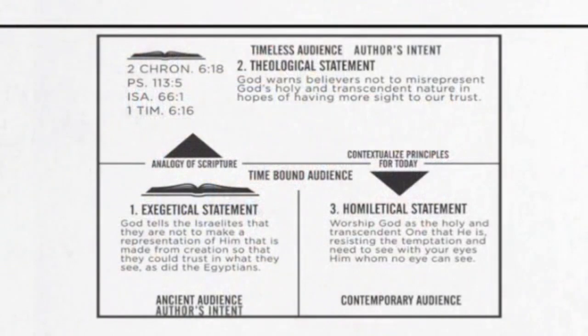God says: you shall not make any idol representation. But what is he really saying? You shall not attempt to control me in any way. Is there any scripture that conflicts with this? No — universally throughout scripture, God is God and we are not. As Daniel says: who can hold back my hand and say, 'What have you done?' Well, you could if he were an idol — you could put him in a box and say 'bad God.' The timeless theological statement: God warns believers not to misrepresent his holy transcendent nature in hopes of having more control. God is in absolute control of all things.